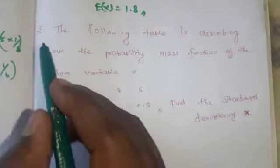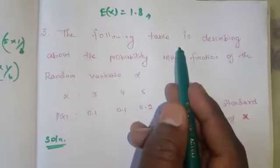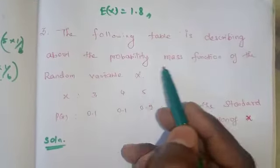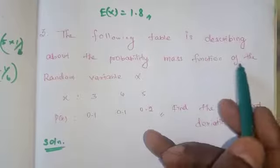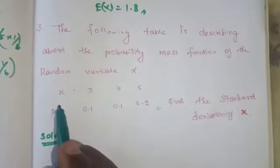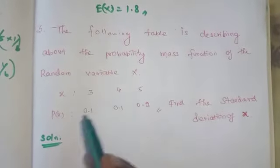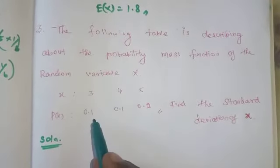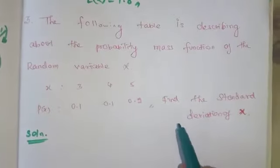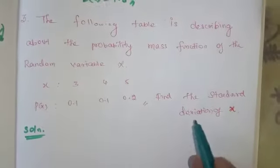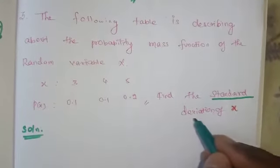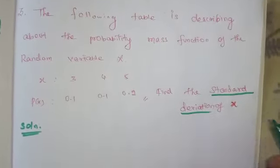Third question. The following table describes the probability mass function of the random variable x. The x values are 3, 4, 5 and the p(x) values are 0.1, 0.1, and 0.2. Find the standard deviation of x.